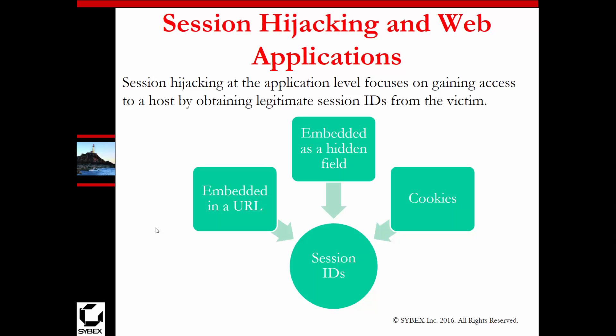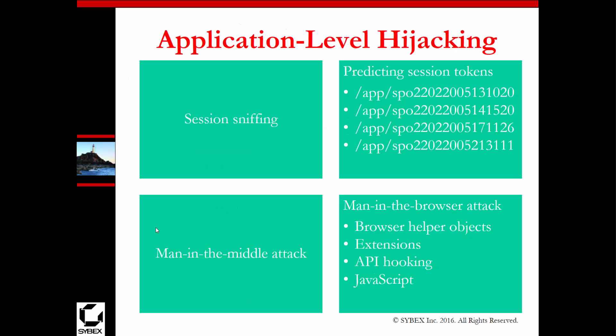Session hijacking at the application level focuses on gaining access to a host by obtaining a legitimate session ID from the victim. This can be done through embedded hidden fields, cookies, or embedded items in a URL — all of which help gain access to the session ID. Session sniffing can also be used to predict session tokens. While session tokens may look randomly generated, there is an algorithm behind them, and you can try to break that algorithm to get the session tokens.